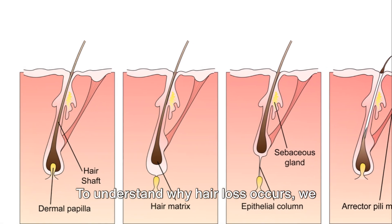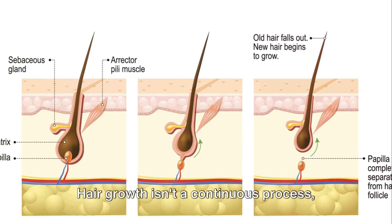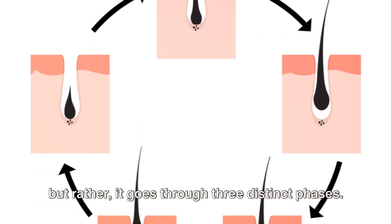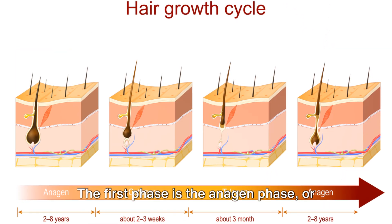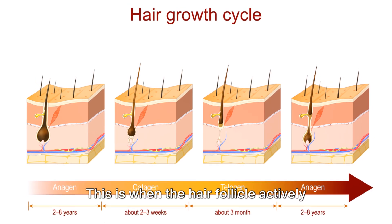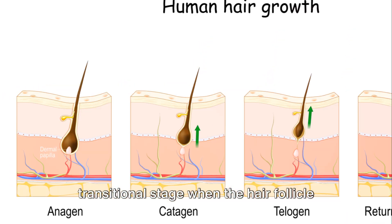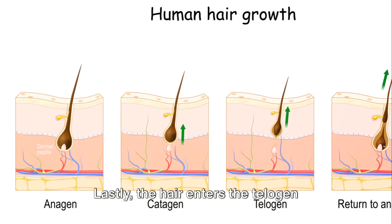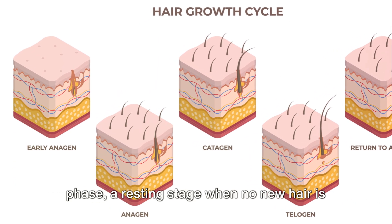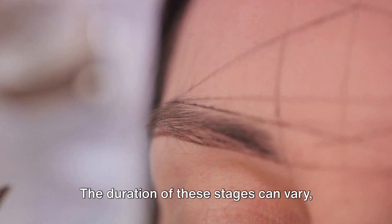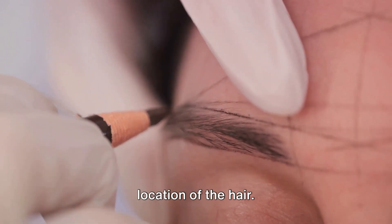To understand why hair loss occurs, we first need to understand how hair growth works. Hair growth isn't a continuous process; rather, it goes through three distinct phases. The first phase is the anagen phase, or the growth stage, when the hair follicle actively produces hair. Then comes the catagen phase, a transitional stage when the hair follicle renews itself. Lastly, the hair enters the telogen phase, a resting stage when no new hair is produced and the existing hair falls out. The duration of these stages can vary depending on factors such as the type and location of the hair.